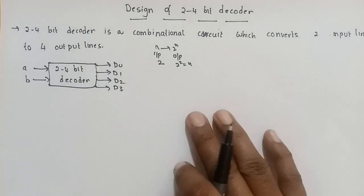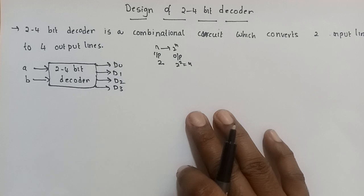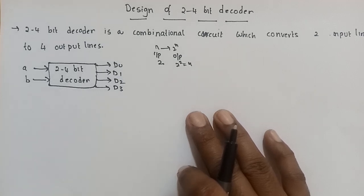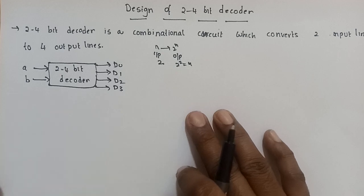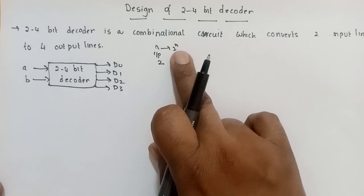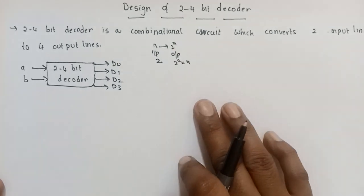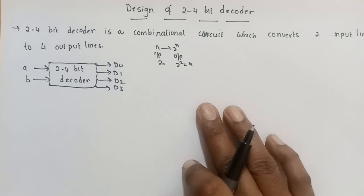The 2-to-4 bit decoder is a combinational circuit which converts 2 input lines to 2^N output lines. More generally, a decoder is a combinational circuit which converts N input lines to 2^N output lines.